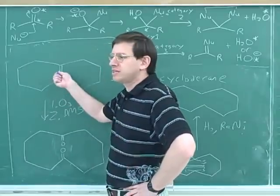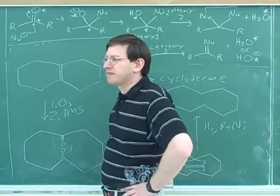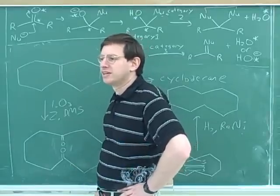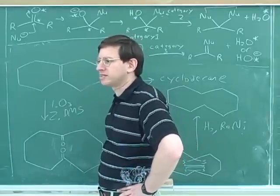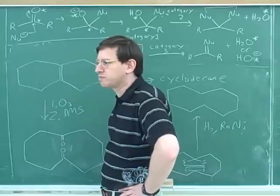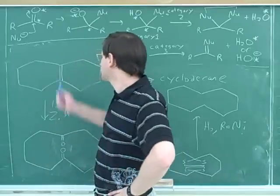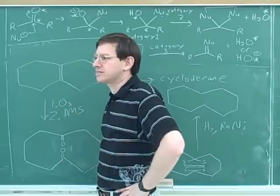Well, we can make them out of alkenes with ozonolysis. And the other way is that we can make them out of alcohols with PCC. Those are our two big ways to make aldehydes and ketones. If you start with an alcohol, you can use PCC to make aldehyde or a ketone. Or if you start with an alkene, you can use ozonolysis.